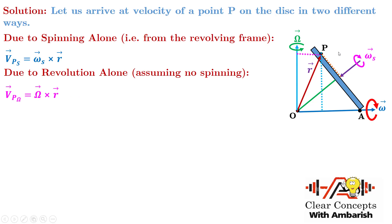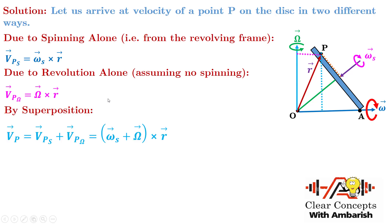So, if the disc were sliding without spinning, this point would have this speed. And on top of that, if it is also spinning, we need to add the extra speed visible from the revolving frame. By superposition, the speed of point P is Vp due to spinning alone plus Vp due to revolution alone — that is, omega_S cross r plus capital omega cross r. Taking cross r common, we can say the speed of point P is simply (omega_spin + omega_revolution) cross r.